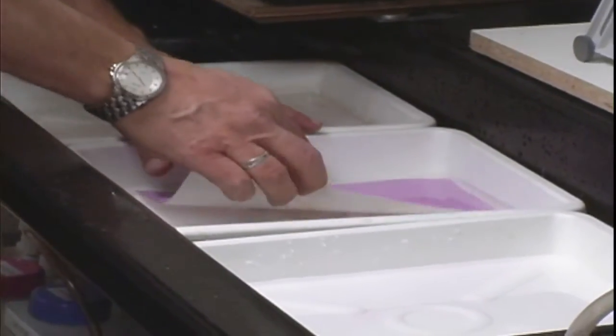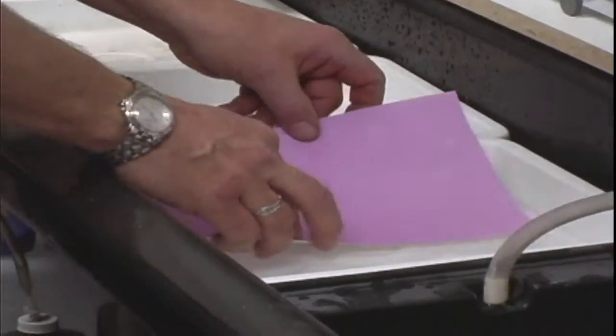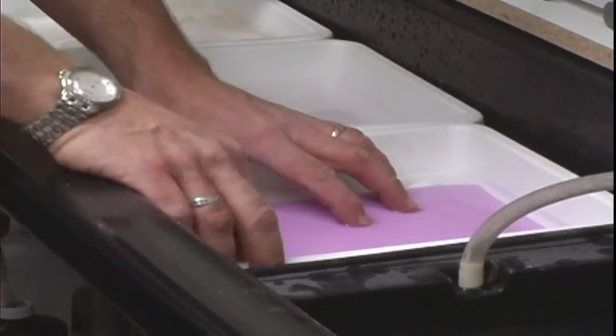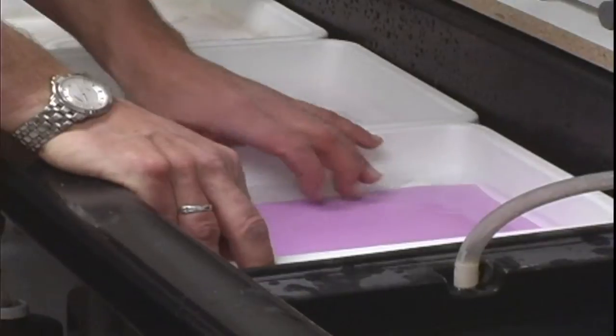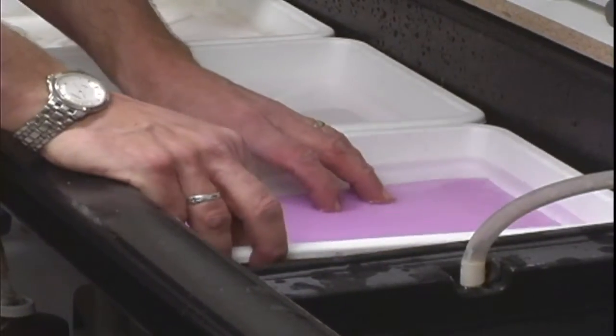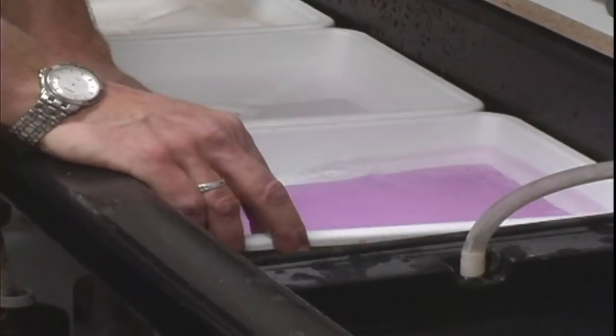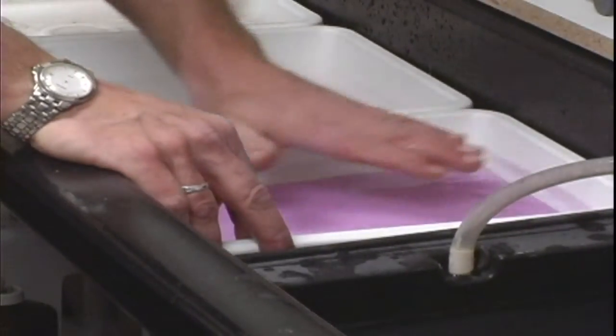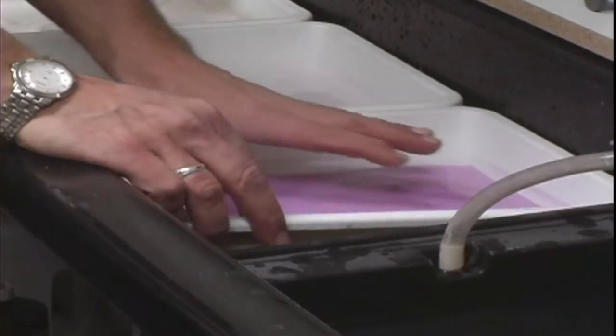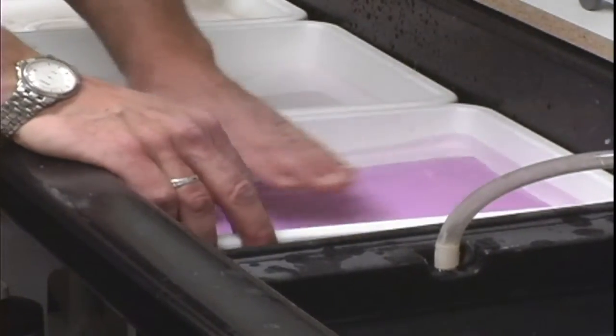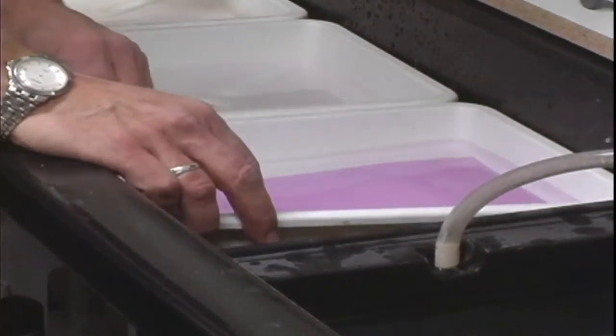From there, we go into what we call our fixer, which will make the paper non-light-sensitive and fix the image in permanently. The fixer goes in and you're going to agitate the chemistry here again so you get a good solution level and the chemical process will work much better.